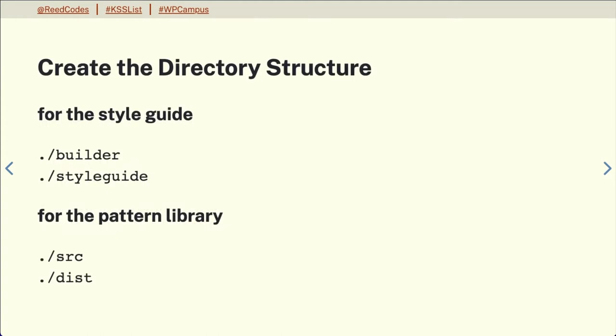The first thing we need before setting up our KSS node project is a place to put it. Once you have your directory or repo for your pattern library, you need at least four directories. You need one for the builder itself, one for the style guide documentation, your source directory for working files, and your distributed or build directory. These aren't set in stone and can be named anything according to your team's coding conventions.